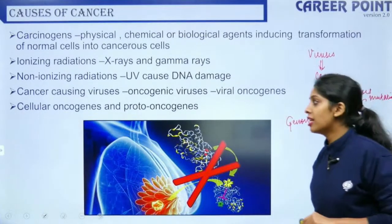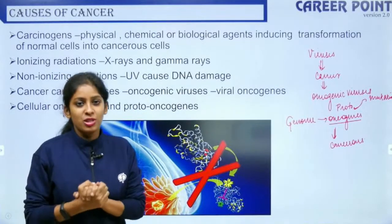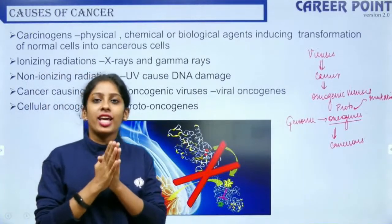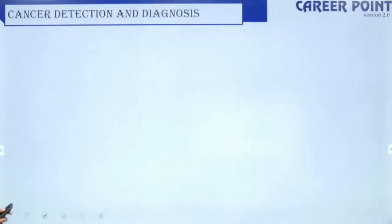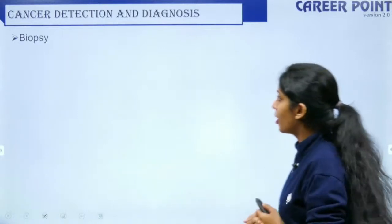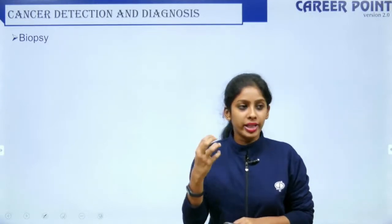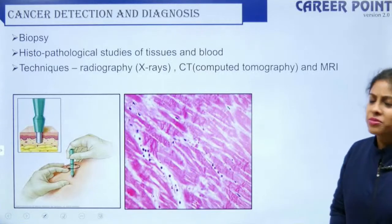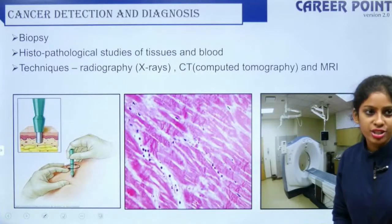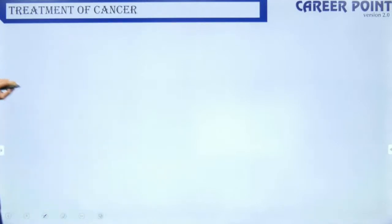We have cellular oncogenes and proto-oncogenes. Cancer detection and diagnosis involves biopsy — taking a tissue patch for histopathological study. X-ray, CT scan, and MRI are also used to detect cancer, though cancer is usually diagnosed at a later stage, which is why treatment is less successful.